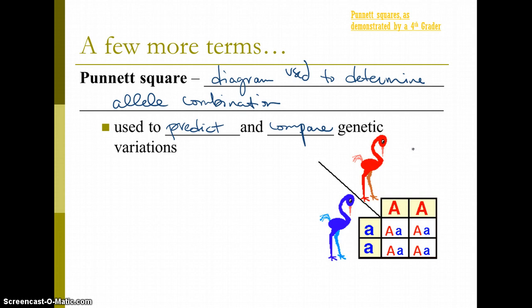And let's say that this parent, this red mythical bird, has the genotype big A, big A, two dominant alleles. It's homozygous dominant. And the blue bird of the same species for the same gene is homozygous recessive, or little a, little a.